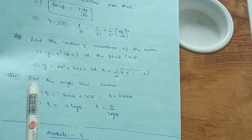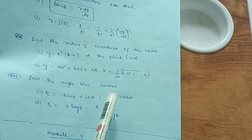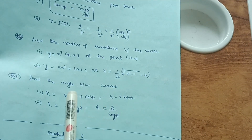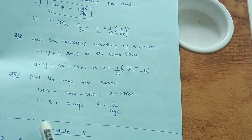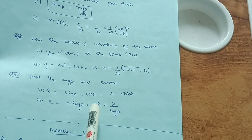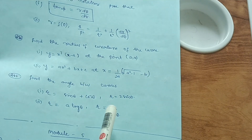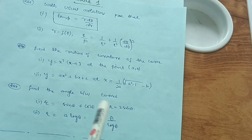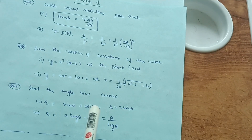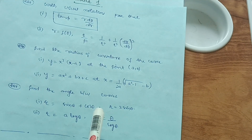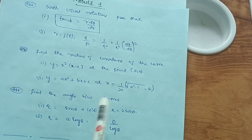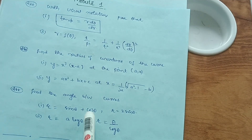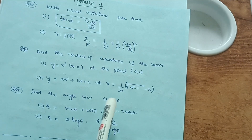Next, find the angle between curves — for example, r = sinθ + cosθ and r = 2sinθ. These are easy questions. Also try r = a·log(θ) and r = θ/log(θ). Focus on four to five problems from this concept. You don't need to cover the parallel equations part — just focus on these varieties of problems I've discussed here.